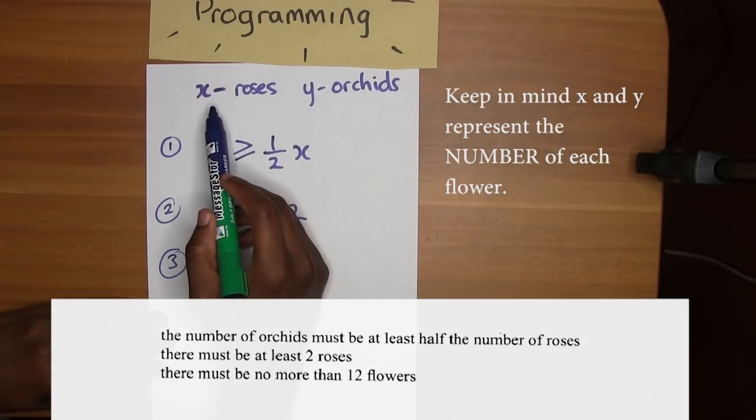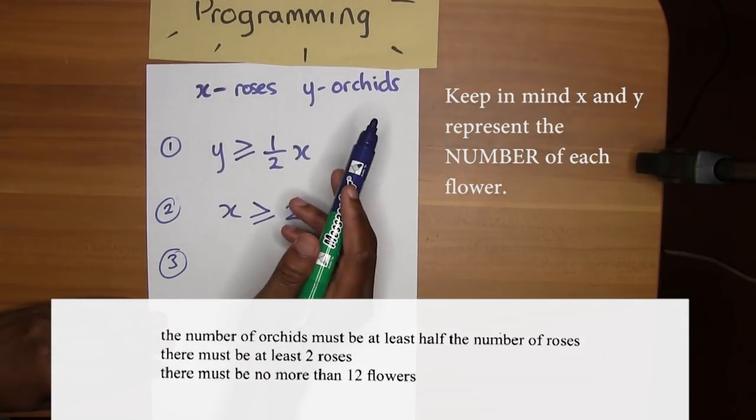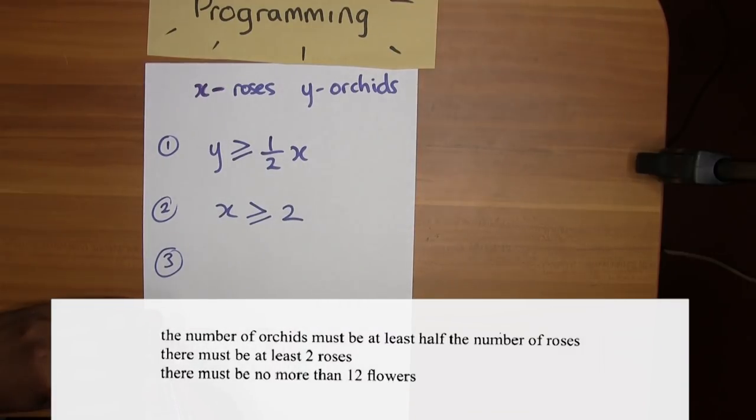Third one, there must be no more than twelve flowers. So you can't exceed twelve flowers. Roses and orchids are flowers, so the number of flowers x plus y must be what? No more than 12. It can be 12 but it can't be more than 12, so that's an equal to as well. x plus y must be less than or equal to 12.